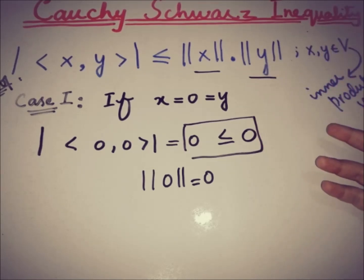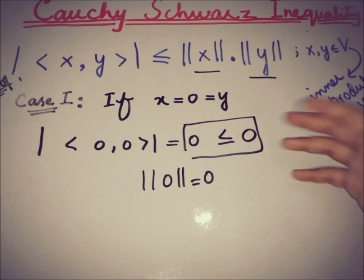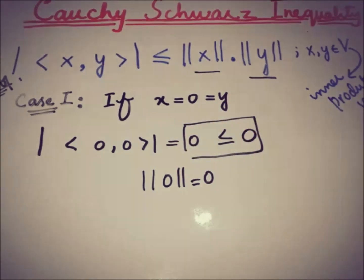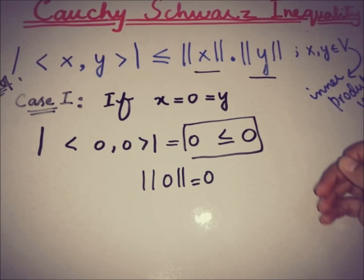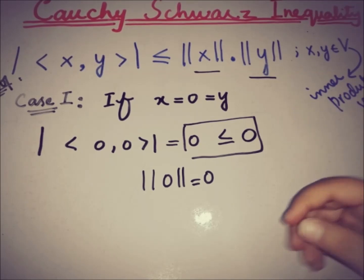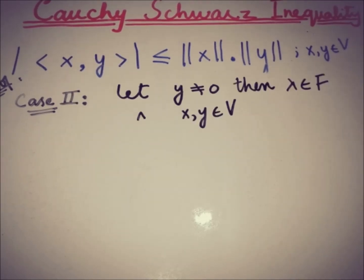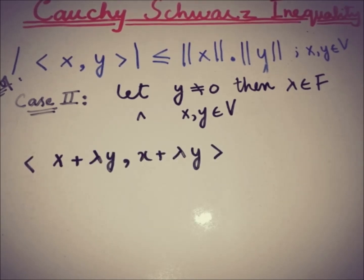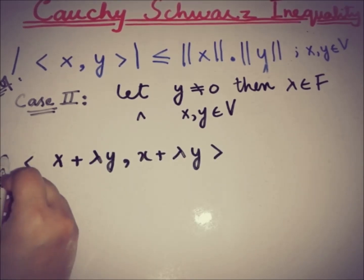We can suppose that at least one of x and y is non-zero, since if both are zero the inequality is trivially true. For Case 2, suppose y is not equal to zero. With x and y elements of the inner product space and λ a field element, we are going to compute ‖x + λy‖², which by definition is greater than or equal to zero.